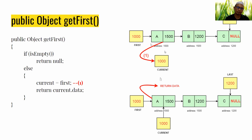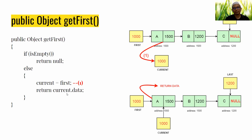The getFirst method is quite easy because first always points to the first node. What we do is assign first to current. We can use current here; alternatively we could just use first, but we use current for consistency.